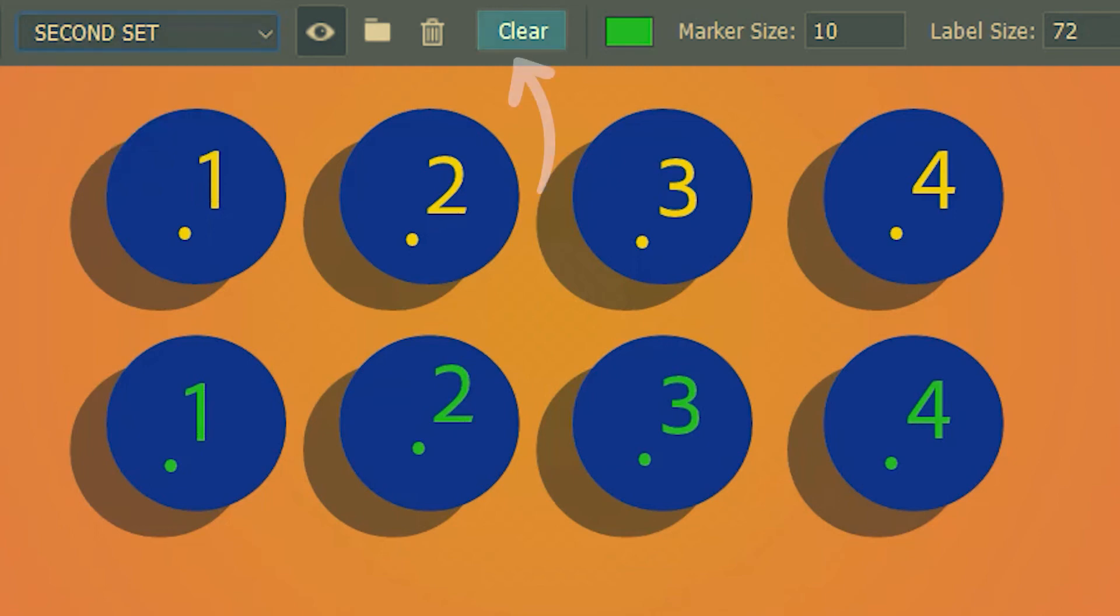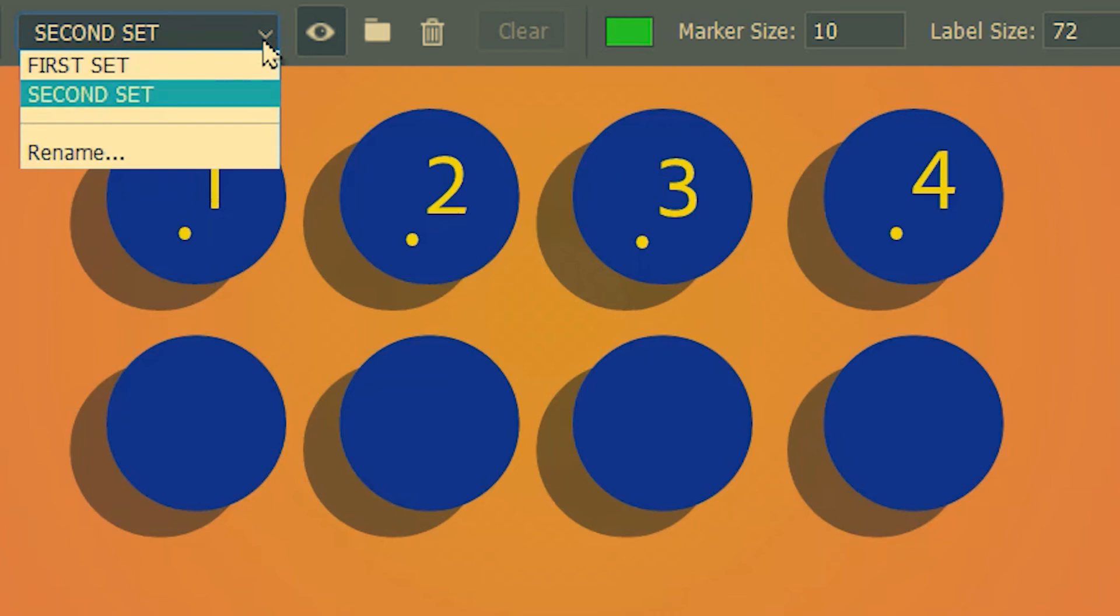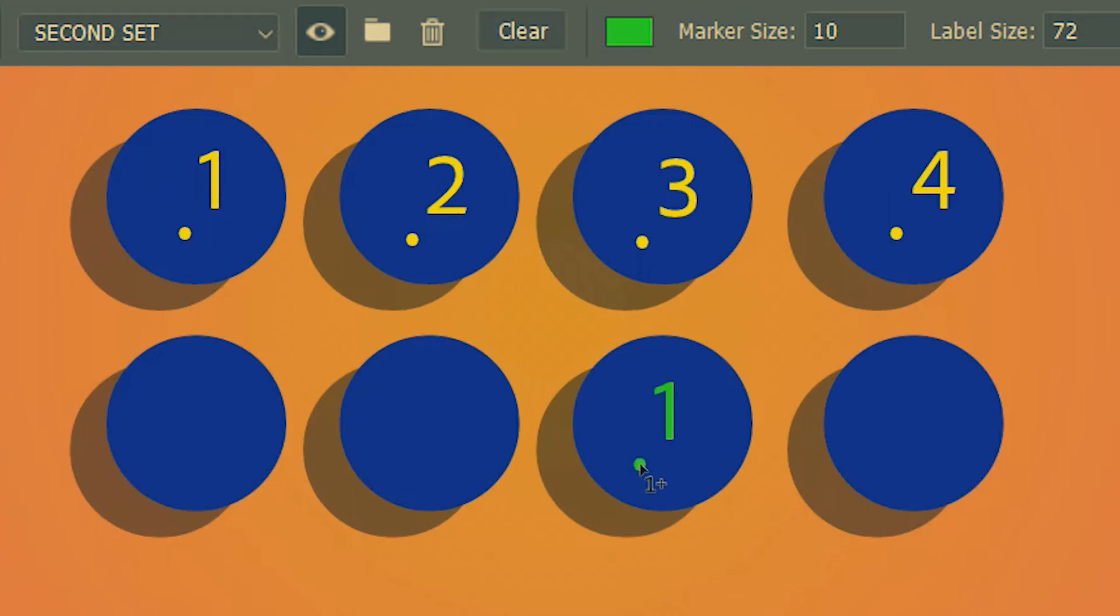And then I'll hit clear. You can see that the second group or the second set is still there although its counters are all deleted. So now you can add fresh counters for the pre-existing group.